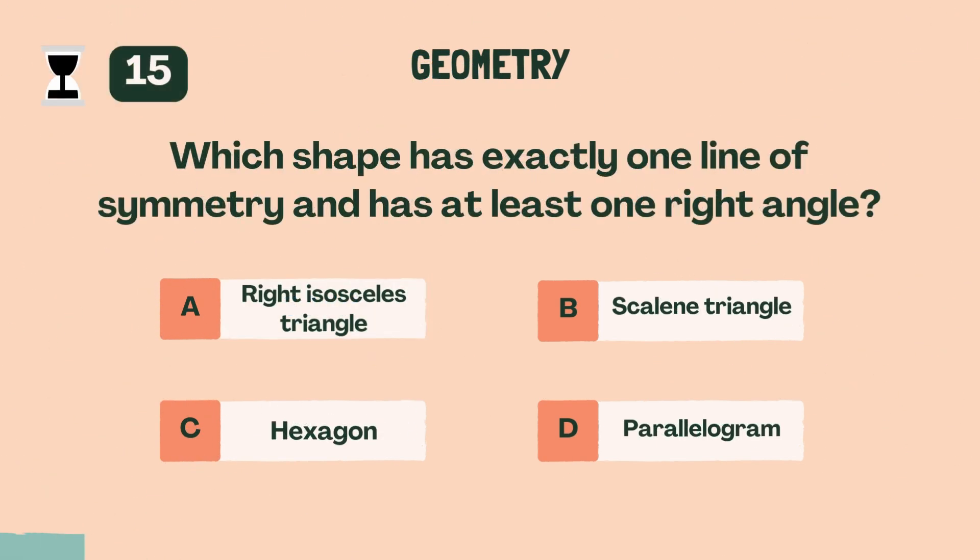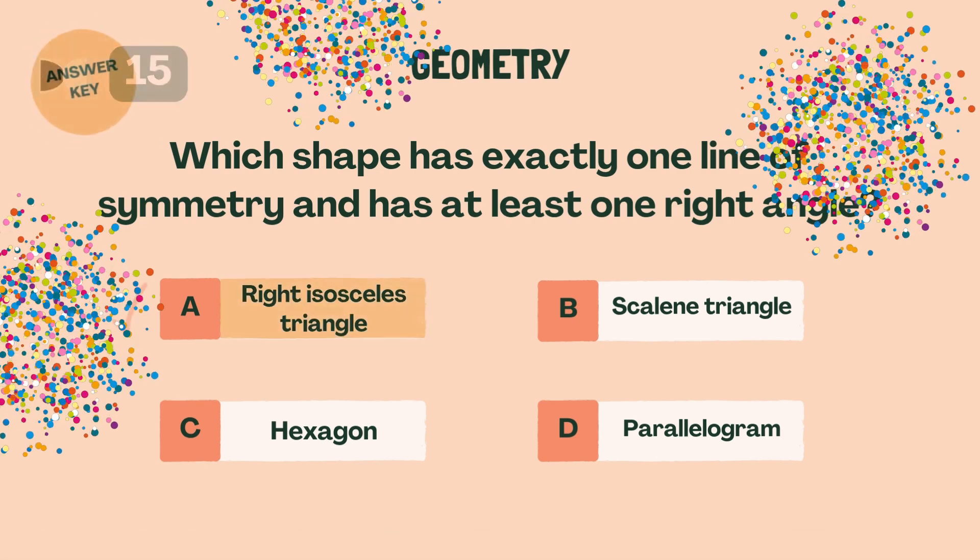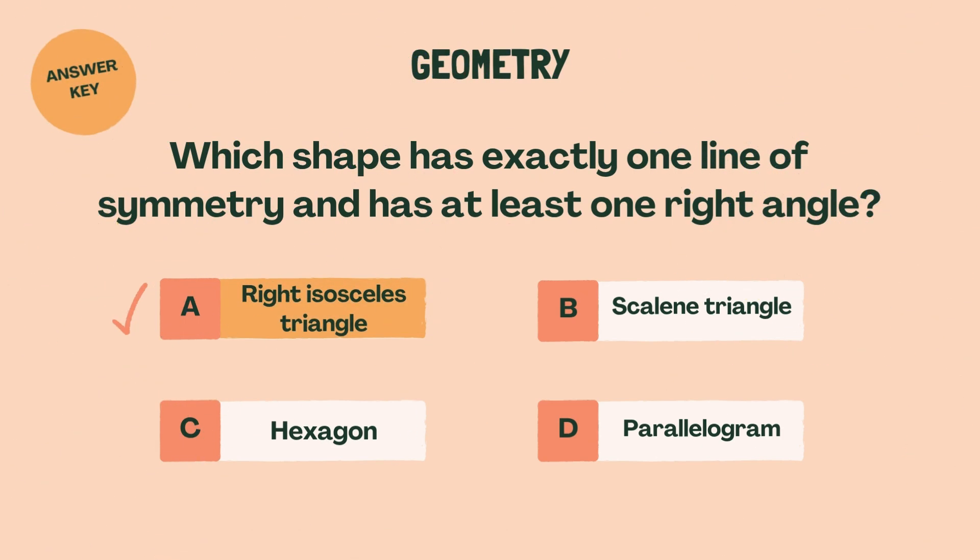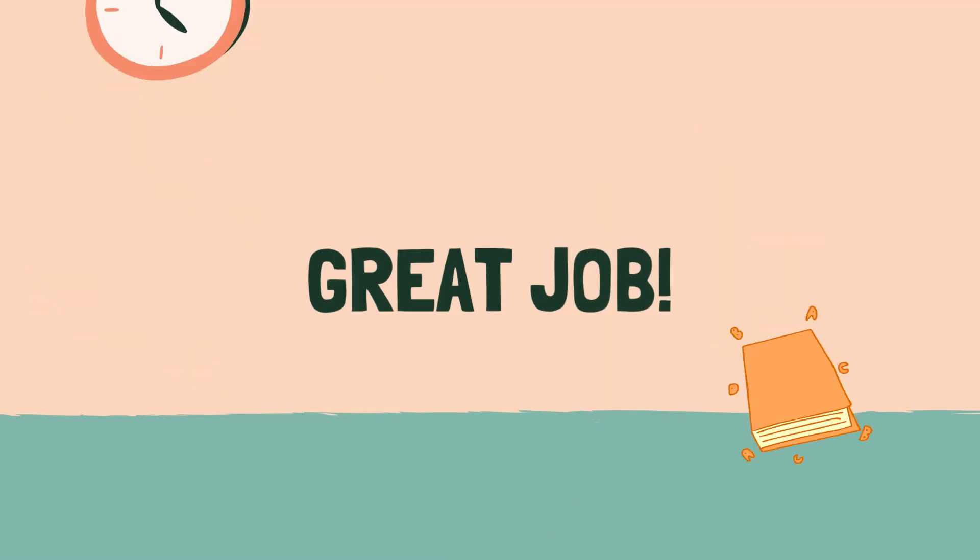Which shape has exactly one line of symmetry and has at least one right angle? A, right isosceles triangle. Great job. Ready for some algebra?